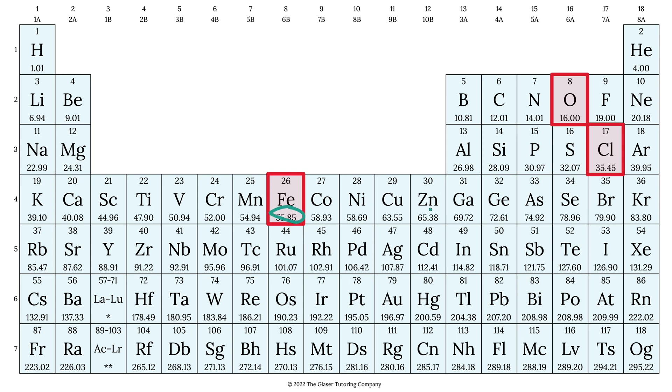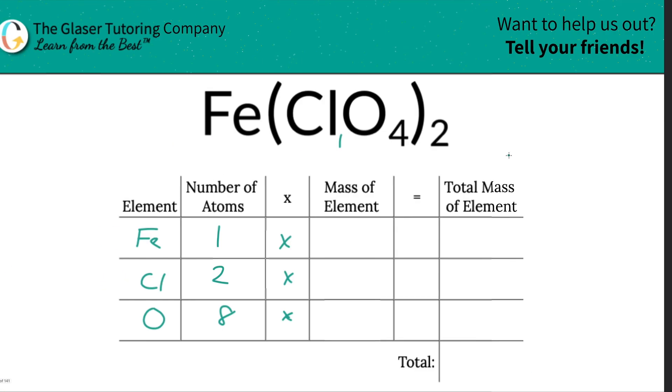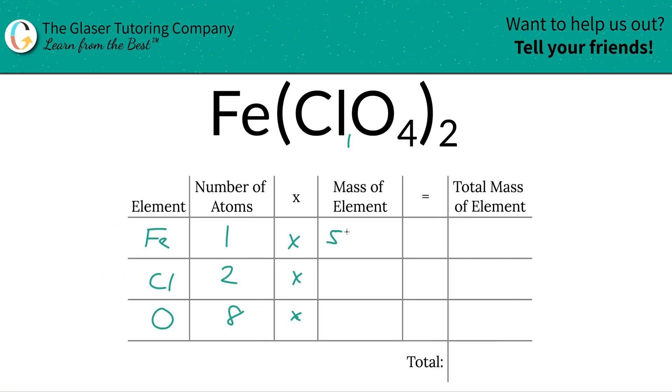So iron is 55.85. Oxygen is 16. Chlorine is about 35.45. So let's write them in. So this is going to be 55.85 for iron, chlorine is 35.45, and then oxygen is going to be 16.